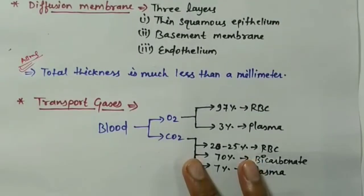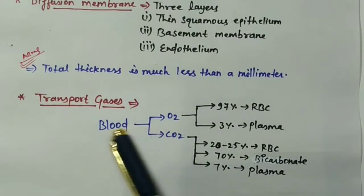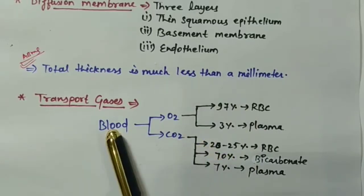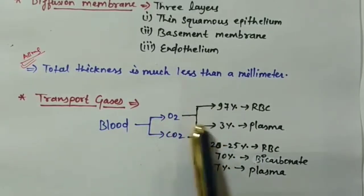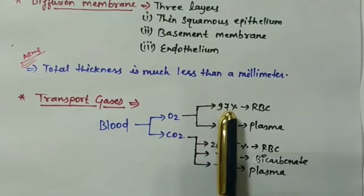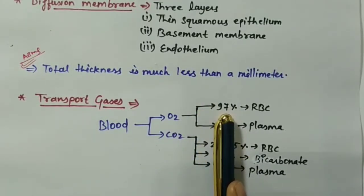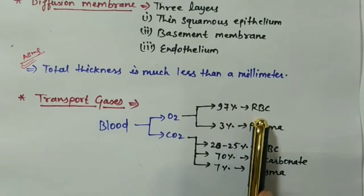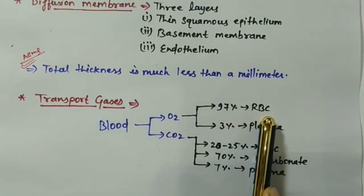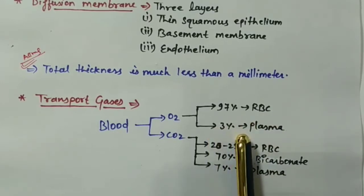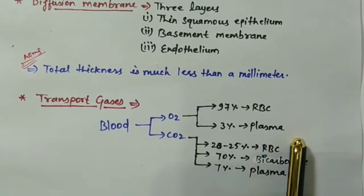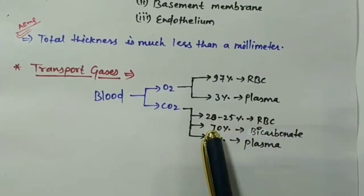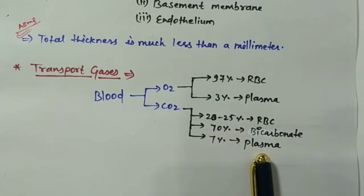Now let's look at the transport of gases. Blood transports both O2 and CO2. For O2: 97% is transported by RBC and 3% is carried dissolved in plasma. For CO2: 20-25% is carried by RBC, 70% is carried as bicarbonate, and 7% is dissolved in plasma.